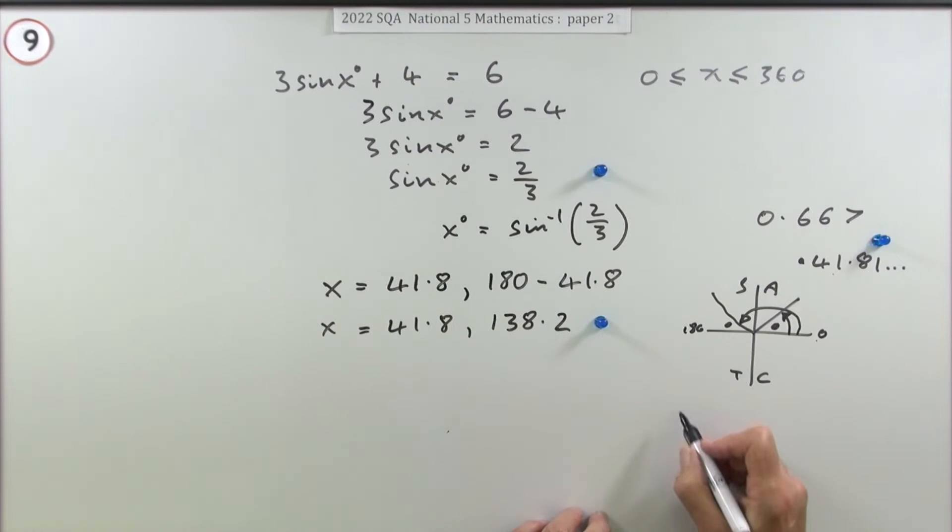Now instead of using that diagram, the other way you could have done it is with a sine curve. As that goes from zero to 360, it'll go through most values twice - apart from the ones which will only go through once, and the minus one which will only go through once, and the zero which will go through three times.